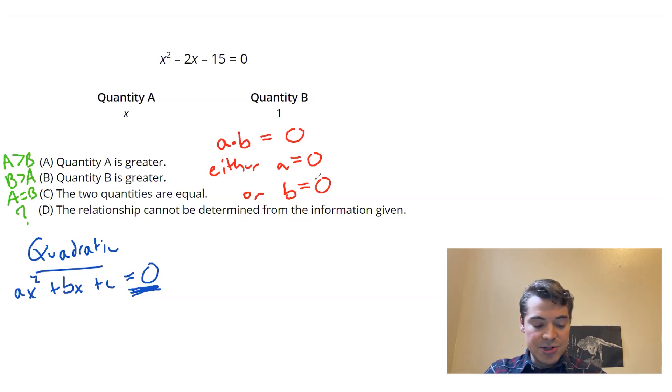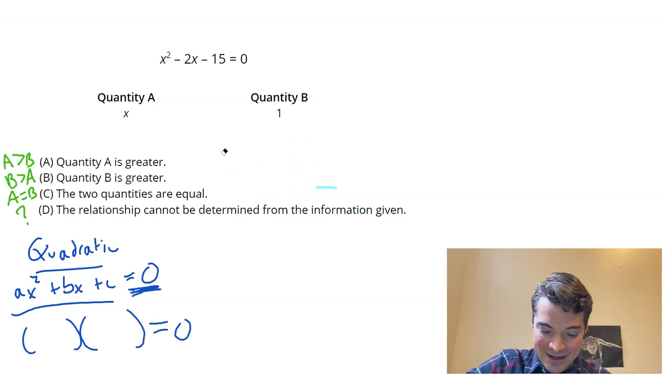So what I want to try and do with a quadratic is take it from this form, where everything is being summed together, and try and rewrite it as a product that is equal to zero. And then I can apply the zero product property. So how do I do that? Well, the way to do that is through something called factoring. You might have heard of foiling before. Factoring is basically foiling in reverse.